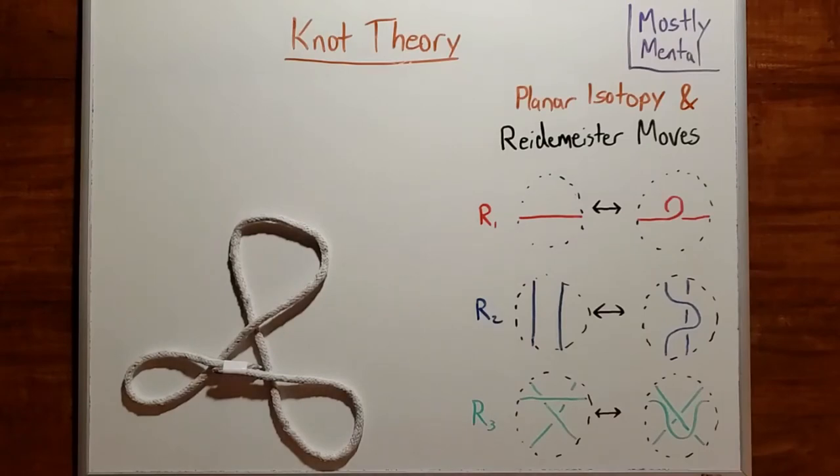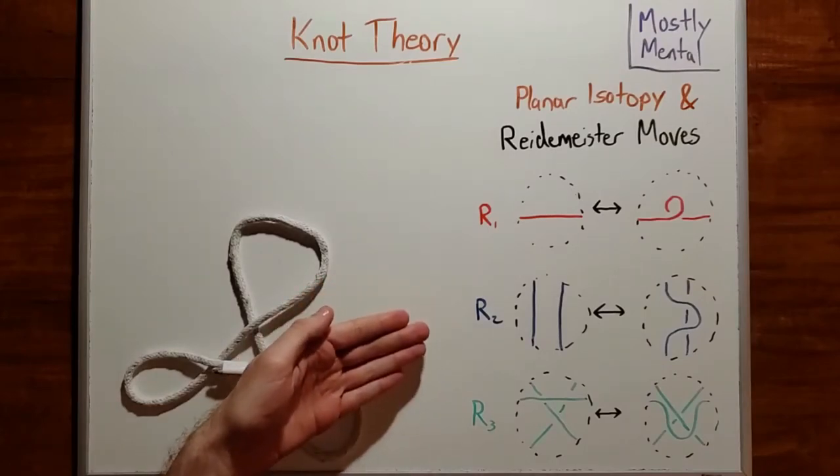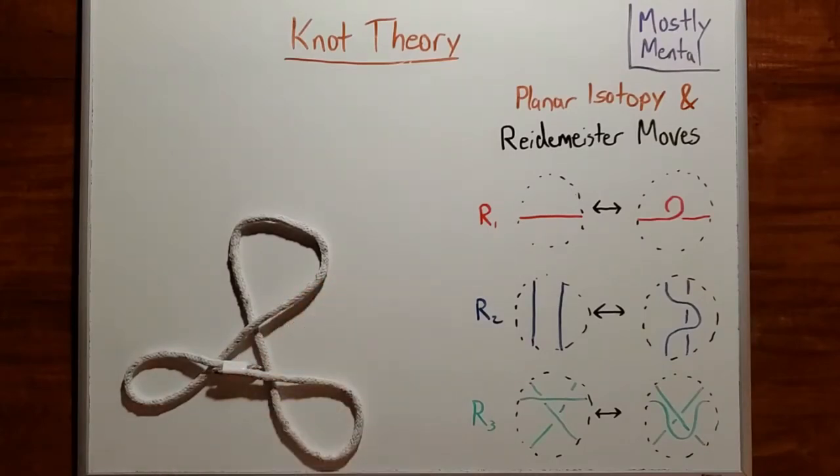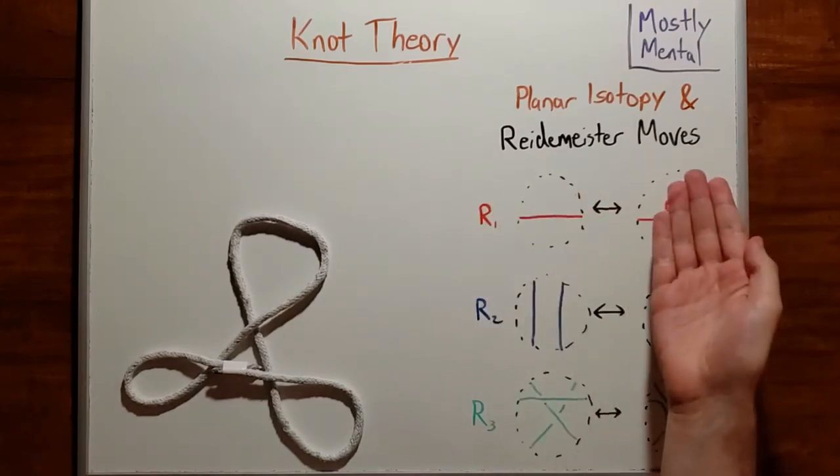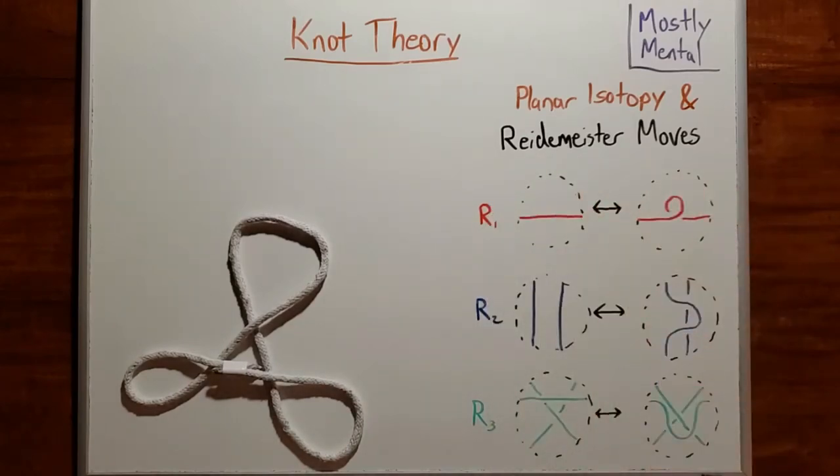Now, you might suspect that we could just keep on listing cases forever and our set of moves would just keep growing. But it turns out we don't need to. This is a complete list. These moves, known as the Reidemeister moves, are the building blocks that make up every move you can make with a knot.